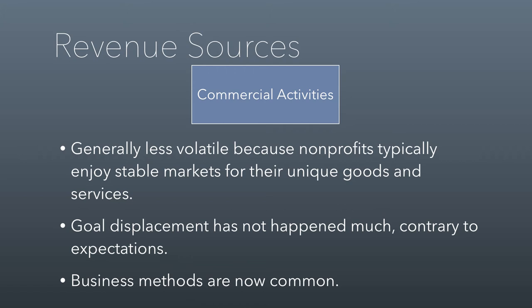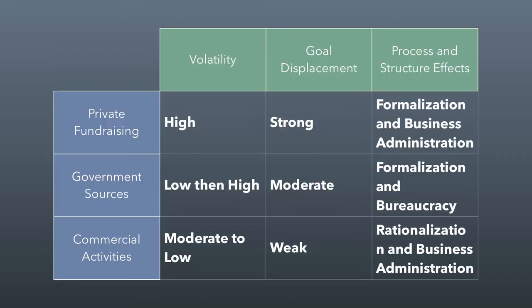As a result, business methods are now very common in nonprofit organizations. A lot of MBAs go get jobs in nonprofits, for example. There's more and more emphasis on that skill set because of commercial activities as a revenue source. The volatility for commercial activities is moderate to low. There's a weak effect as far as goal displacement is concerned, and there's a lot of rationalization of activities — meaning a lot is based on bottom-line thinking rather than pure mission thinking — and business administration tools have changed the way nonprofits work.